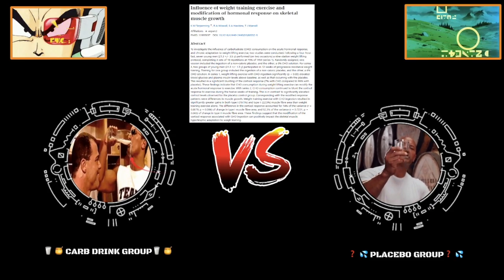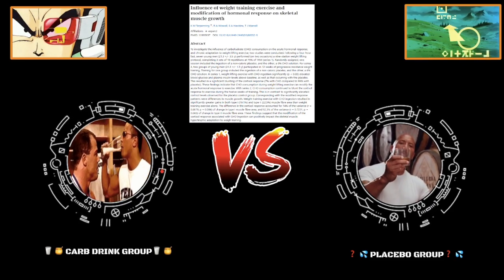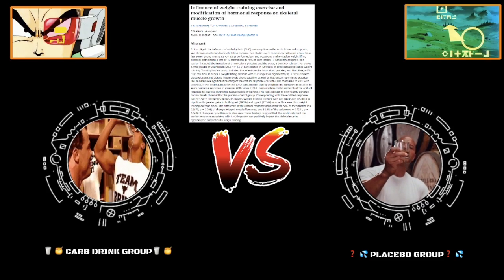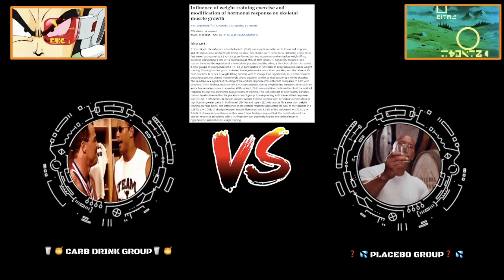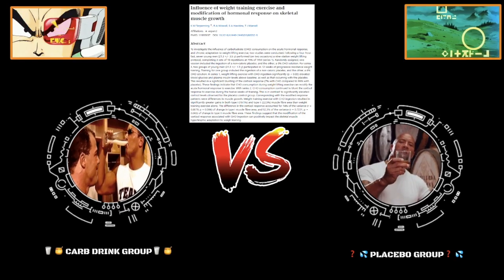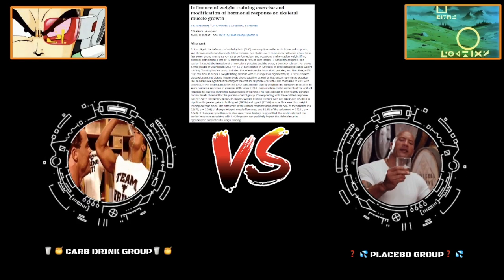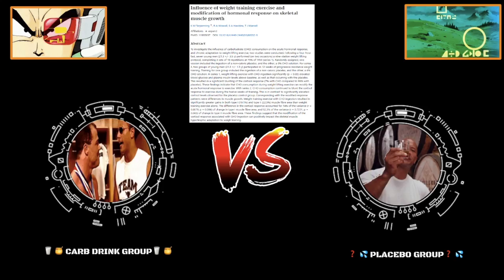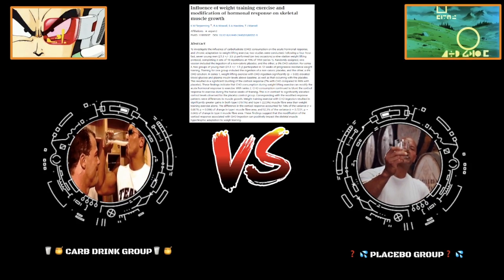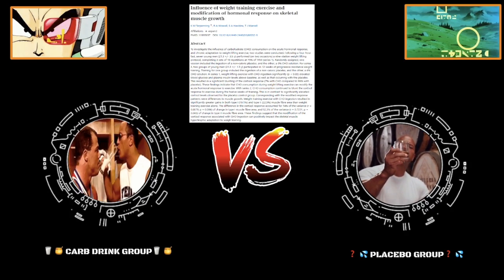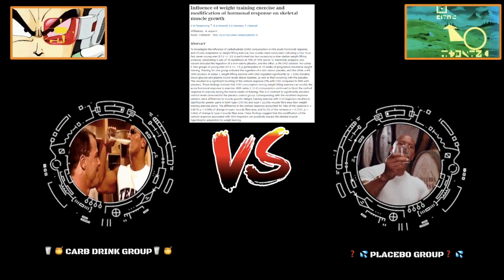Group one was given a carbohydrate drink, something that has some carbs mainly to lower cortisol. You guys know one of the main reasons why cortisol goes up during training is because of glucose demand. Your body releases cortisol to pretty much break things down in order to generate glucose for energy.